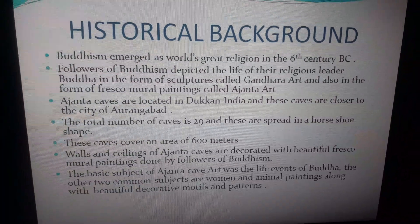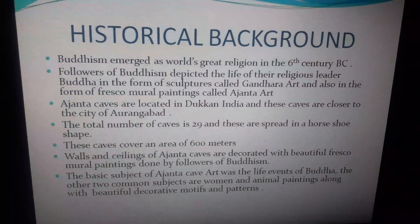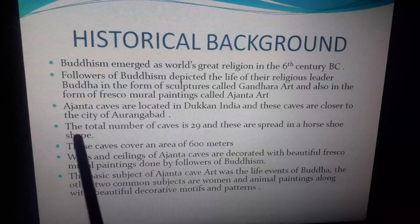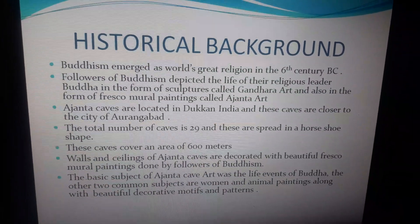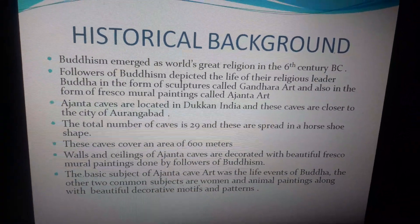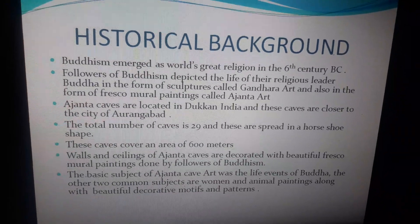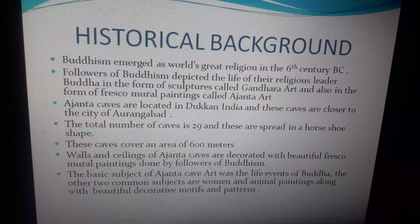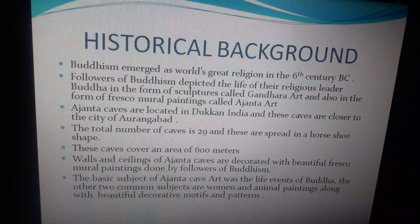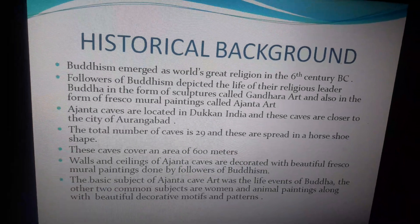The Ajanta caves are located in Deccan, India, closer to the city of Aurangabad. The total number of these caves is 29. They are not natural caves — they are man-made caves, carved and developed by the followers of Buddhism known as monks. These caves cover an area of 600 meters and are spread in a horseshoe shape.